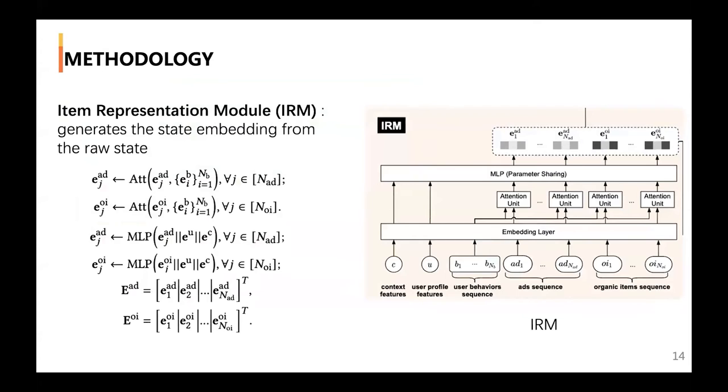In the IRM, it generates the state embedding from raw state. To separately process the information from different sources, IRM generates two sequences of mixed embeddings, one for ads and one for organic items.